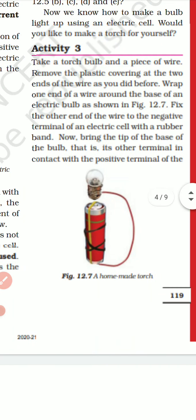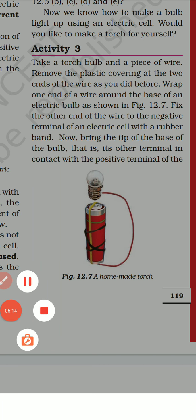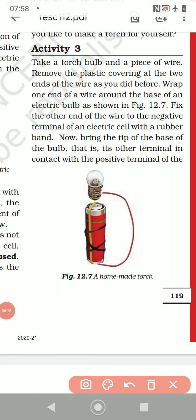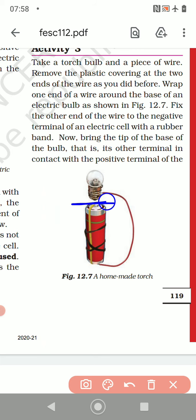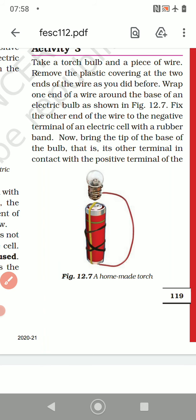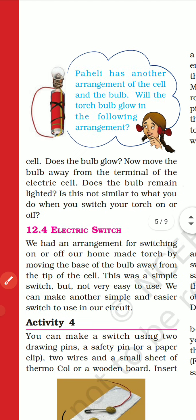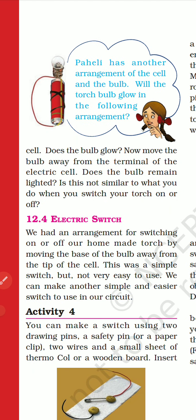When you bring the bulb tip closer to the positive terminal, the bulb will start glowing — you can see the bulb starts glowing. Now, move the bulb away from the terminal of the electric cell. Does the bulb remain lighted? If you move it away from the cell, it won't be lighted, because there will be no complete path.